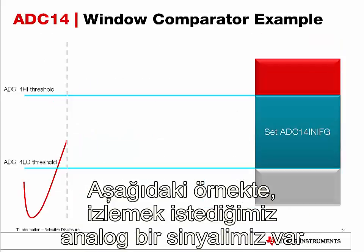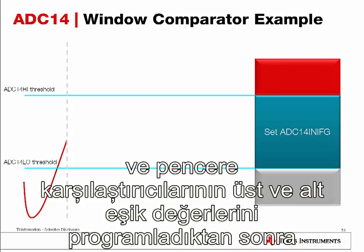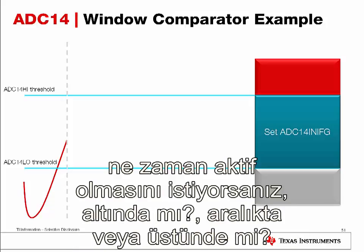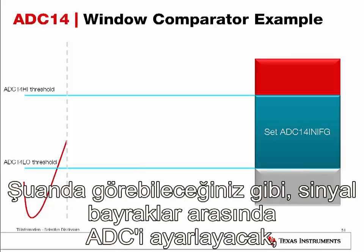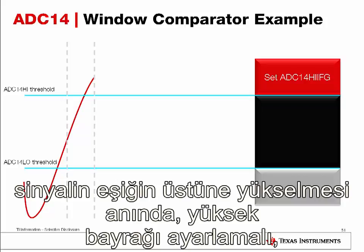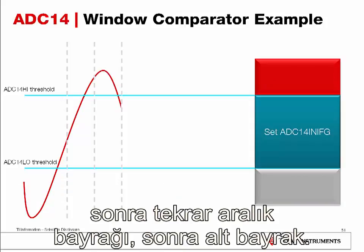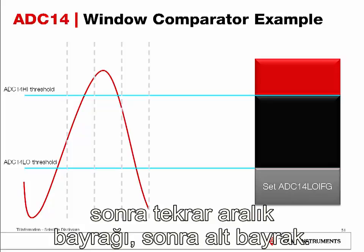In the example shown, we have an analog signal being monitored. After programming the high and low thresholds of the window comparator, depending on whether you want to enable the below, between, or above interrupt, you can set the flag and trigger the CPU to wake up when the signal falls within the right range. The signal will set the ADC in-between flag, and as the signal rises above the high threshold, it will set the high flag, then the in-between flag again, and then the low flag.